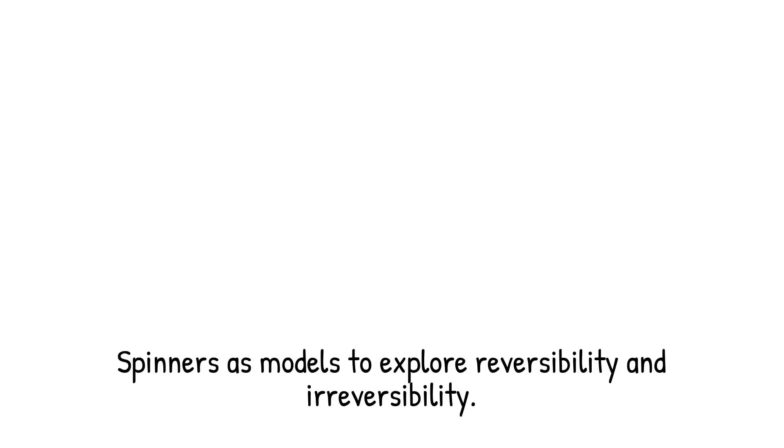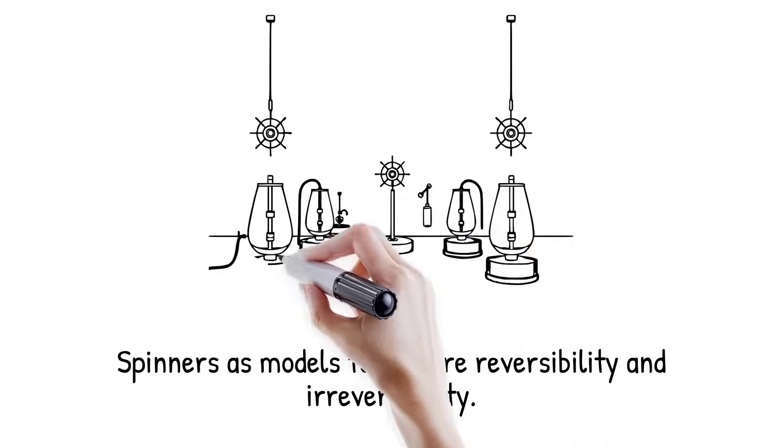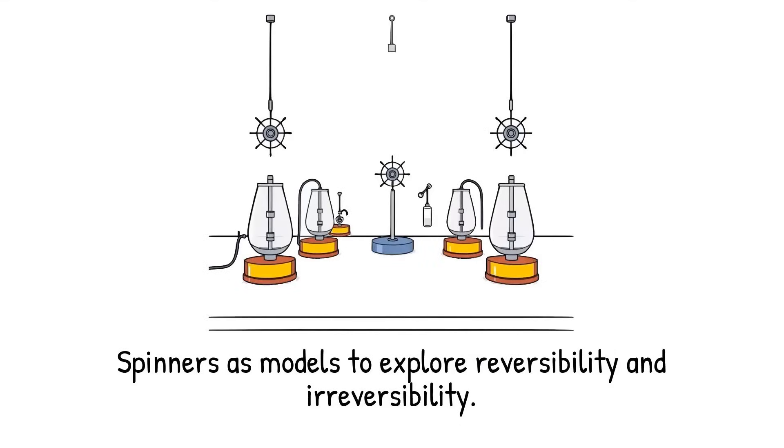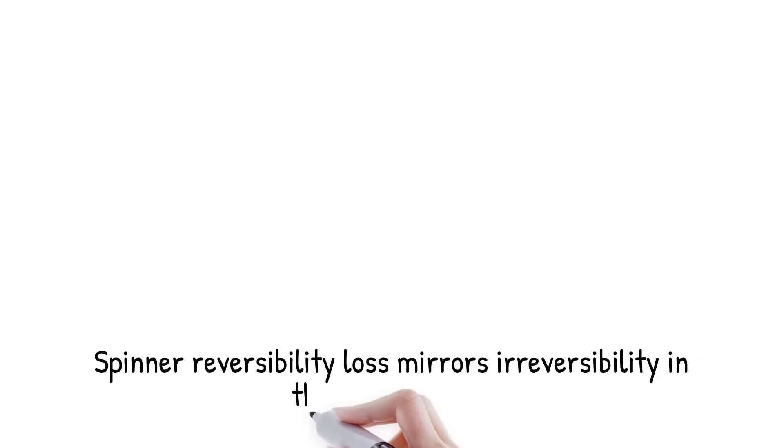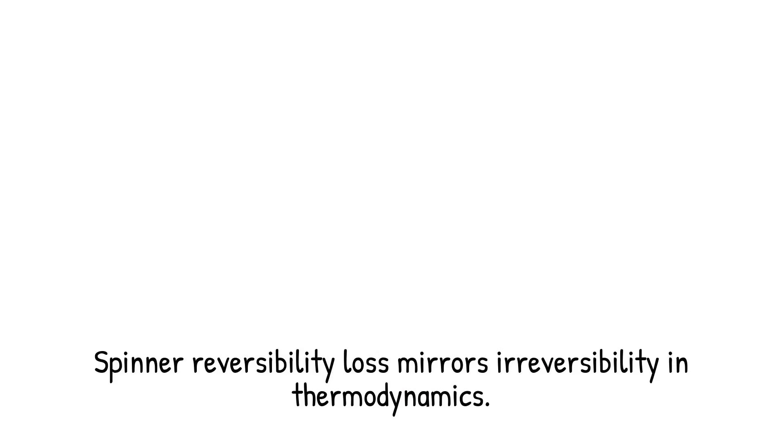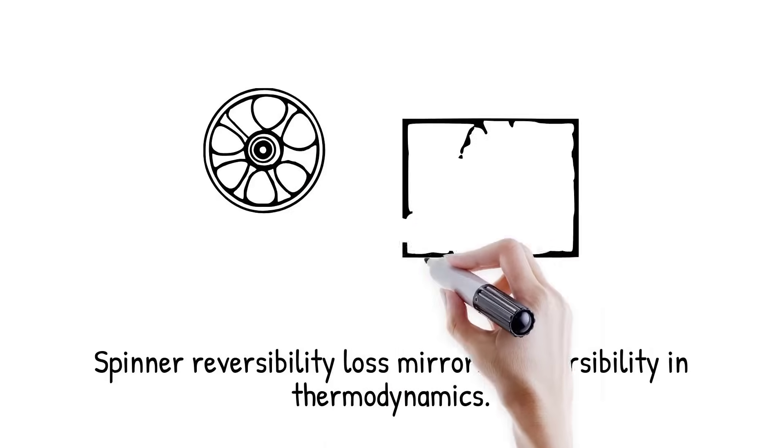The gradual loss of reversibility in spinner ensembles parallels the emergence of irreversibility in thermodynamic processes. It is like rewinding a video perfectly at low speed, but watching it blur and distort as the pace increases.